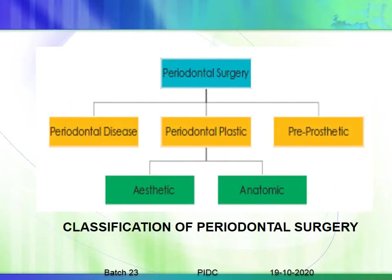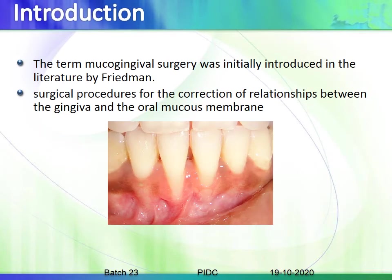Starting with the classification of periodontal surgery, it has been divided as: surgical procedures aimed at reducing periodontal disease; surgical procedures for aesthetic or anatomic conditions, which come under periodontal plastic procedures; and pre-prosthetic surgical procedures. The term 'mucogingival surgery' was initially introduced in the literature by Friedman.